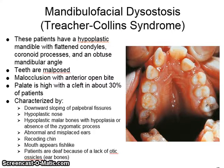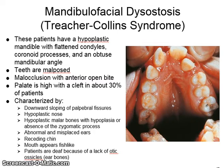Mandibulofacial dysostosis, or Treacher-Collins syndrome, is characterized by a hypoplastic mandible, flattened condyles and coronoid process, an obtuse mandibular angle, teeth that are malposed with malocclusion and anterior open bite, and a high palate with a cleft in about 30% of cases.